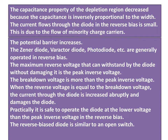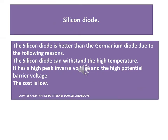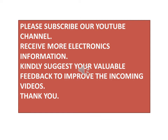The reverse biased diode is similar to an open switch. The silicon diode is better than the germanium diode for the following reasons: the silicon diode can withstand high temperatures, it has a high peak inverse voltage and a high potential barrier voltage, and the cost is low.